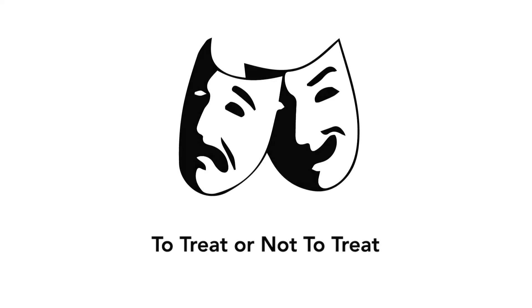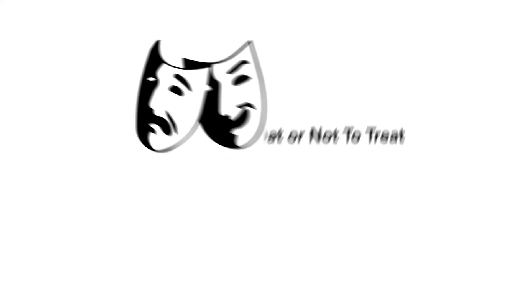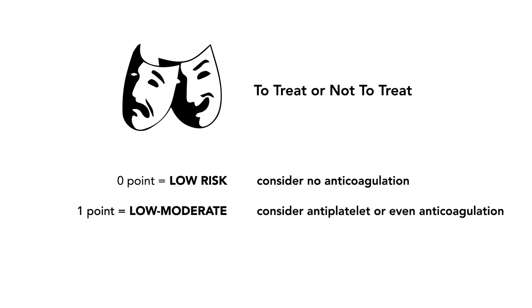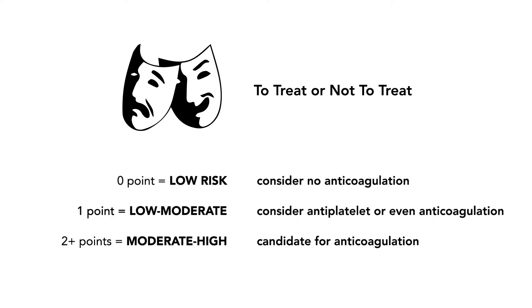In regards to treatment and management, the general recommendation for whether or not to start anticoagulation therapy is stratified based on the points a patient scored. Patients with scores of 0 are considered low risk and may not require anticoagulation. Patients with a score of 1 are low to moderate risk and should consider antiplatelet therapy such as aspirin, or even anticoagulation. Scores of 2 or more are considered moderate to high risk and patients should be considered candidates for anticoagulation therapy.